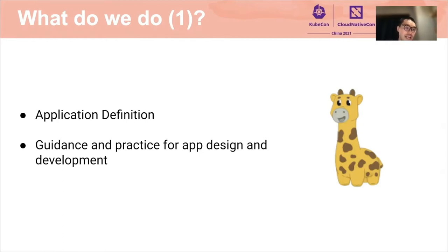App delivery also covers how to design and develop applications. We provide best practice guides on how an application architecture should look and fit cloud-native patterns. Modern applications designed with such patterns would benefit from the community and the cloud better. For example, Dapr has empowered modern applications to talk to backend services easily, including open source components like MySQL, Kafka, Redis, and many other cloud services.